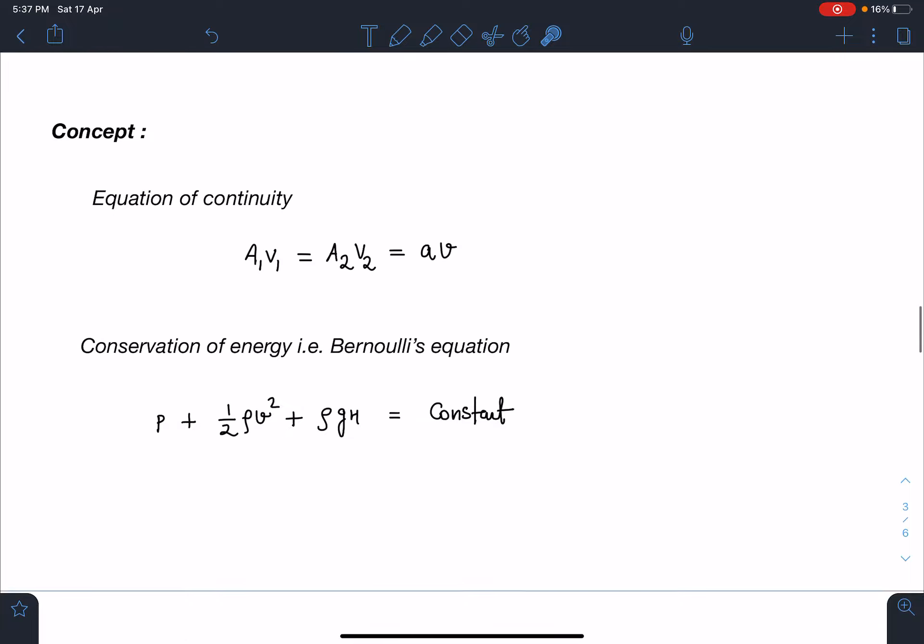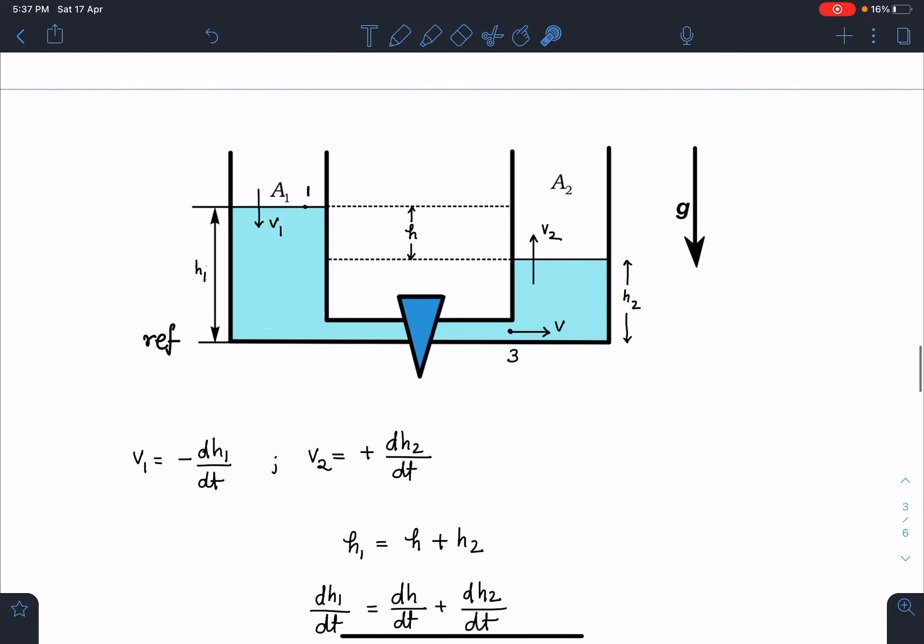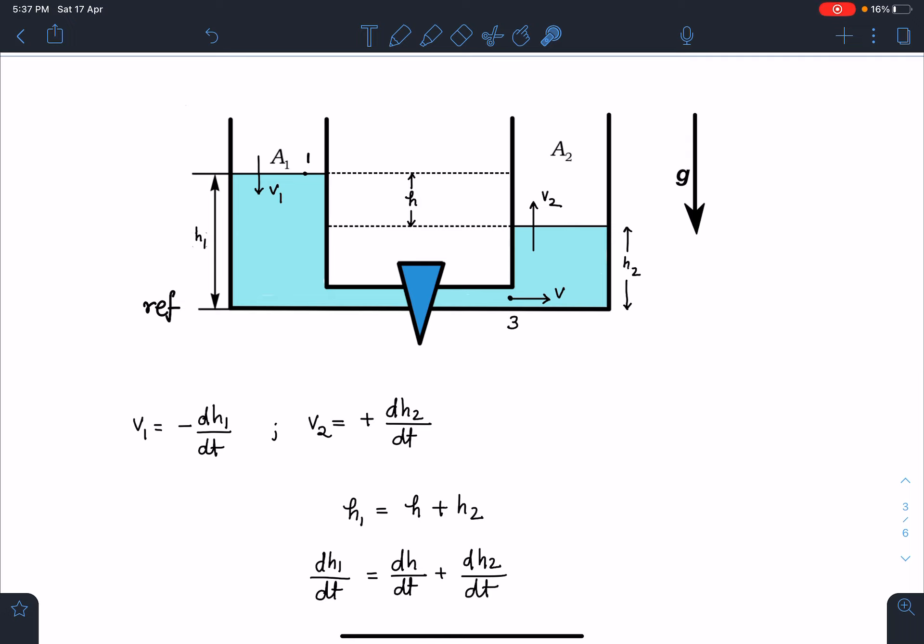Let's analyze the situation at any time t. At any time t when this water level is h1 and here it is h2, the height difference is h which is h1 minus h2. This velocity I am calling v1 and this velocity I am calling v2. At point 3, this point 1, point 2, and point 3, at point 3 velocity is v.